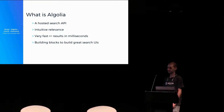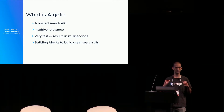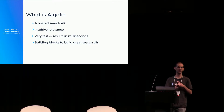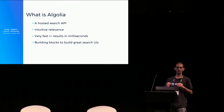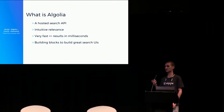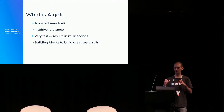A bit more about Algolia. Algolia is an API — an as-a-service search API — so everything you do with your search, you interact through the API. If you want to search, index your data, or configure the relevance, everything goes through the API. These APIs allow you to build really relevant search. You have all the tools out of the box to do great relevance. And it's really fast. As soon as you type something, you get results instantly, because it's been built from the ground up to do this type-as-you-type experience.